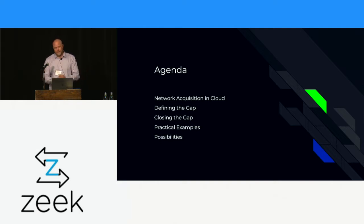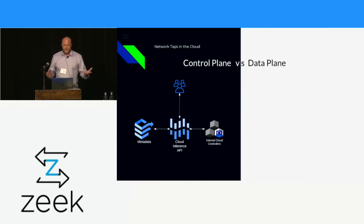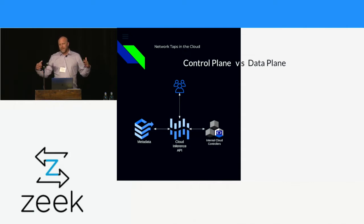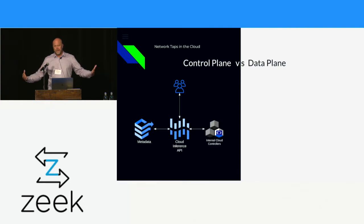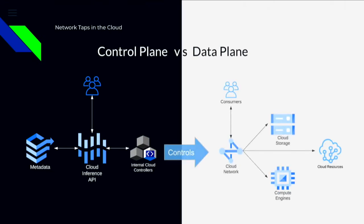As we talked about at the very beginning where Wendy spoke — evidence, the more evidence we can have, the better. When we're talking about the cloud, we're really talking about two different planes. We've got the control plane where you interact with some kind of API, and it in turn uses some kind of controller to create these cloud resources. It's magic — I say give me a compute instance, and boom, I get a compute instance.